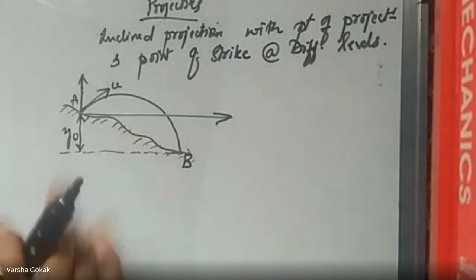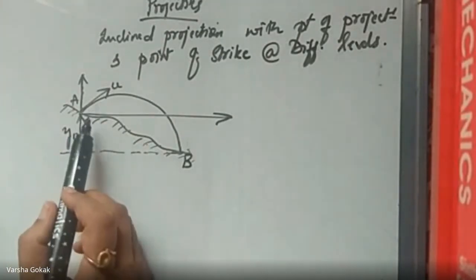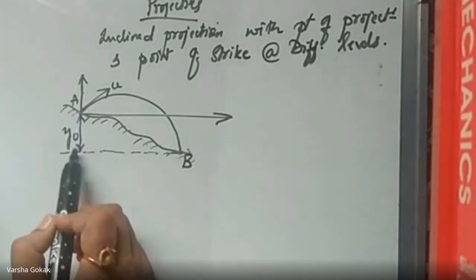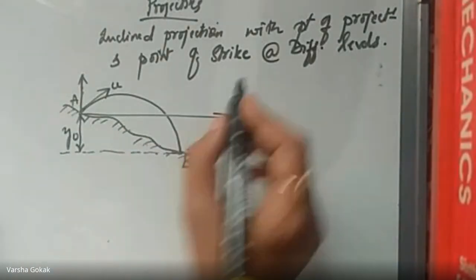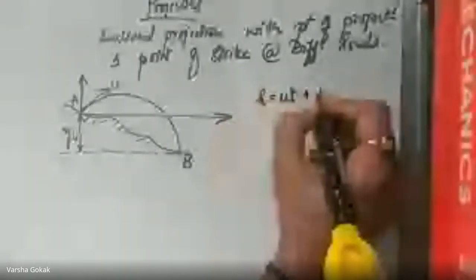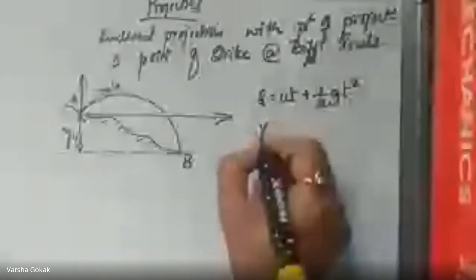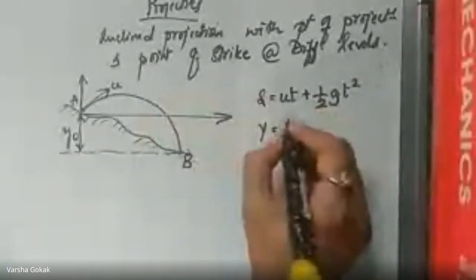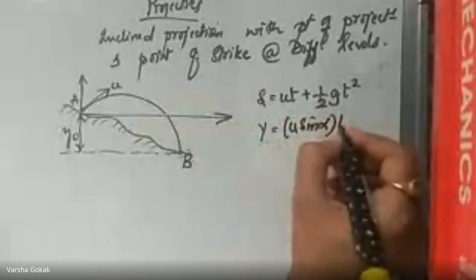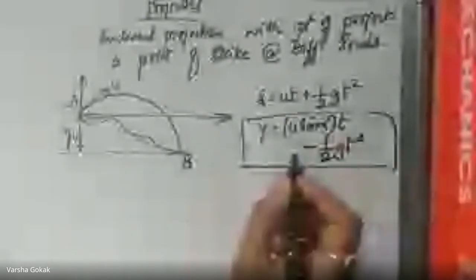There is no full derivation — just a bit of theory, and then you directly substitute into the formula. When the point of projection is at a height y-naught above the point of strike, we can use the equation of motion. S equals ut plus half gt squared. Here, S becomes y, giving us: y equals u sine alpha times t minus half g t squared. This is the key equation from the equation of motion.